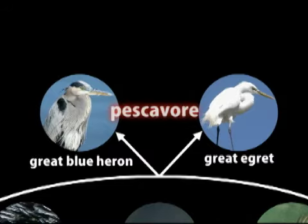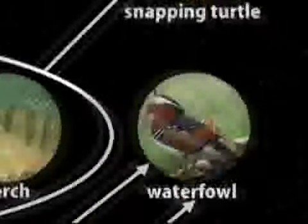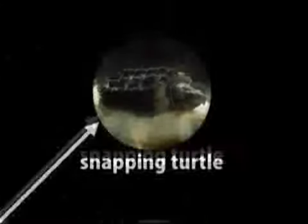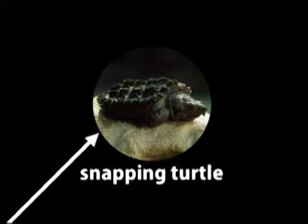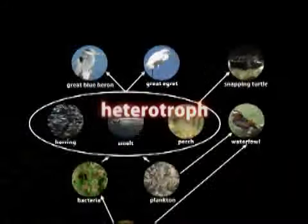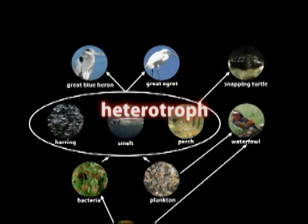One bird, however, the waterfowl, feeds on plankton and dead bacteria, mainly small organisms, rather than the small fish. In addition, the snapping turtle is another wetland pescavore, since it eats the small fish that live in the environment. The fish, birds, and turtles are heterotrophs, since they do not make the energy themselves.